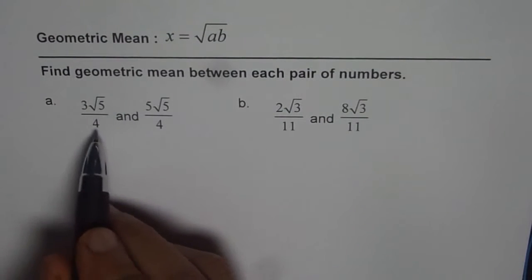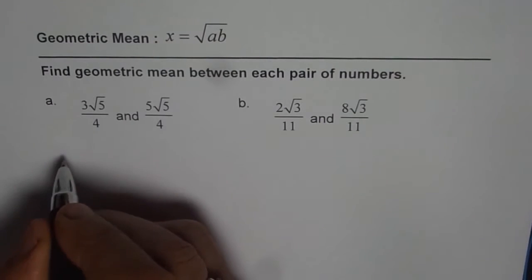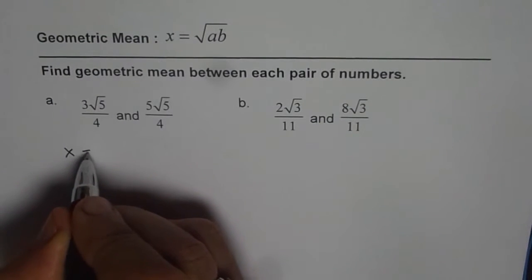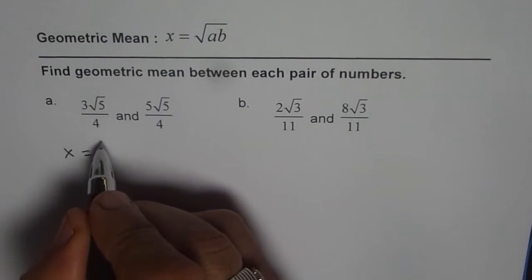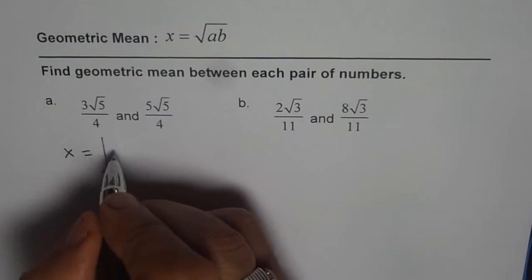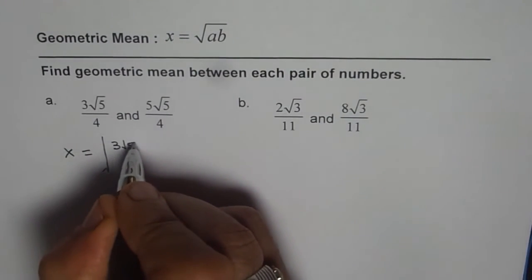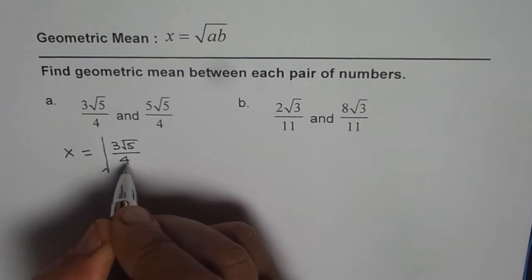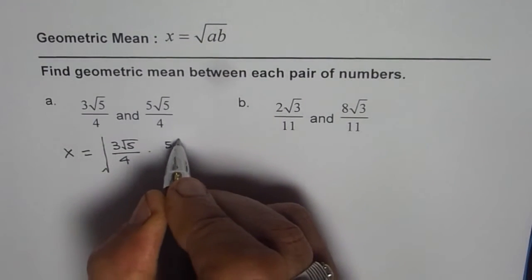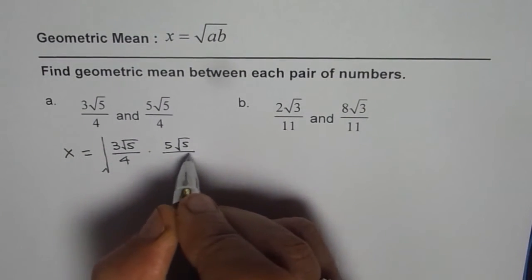Let x be the geometric mean between these two numbers. These are the extreme numbers. In that case, x will equal square root of the product of these numbers, which is 3 square root 5 over 4 times 5 square root 5 over 4.